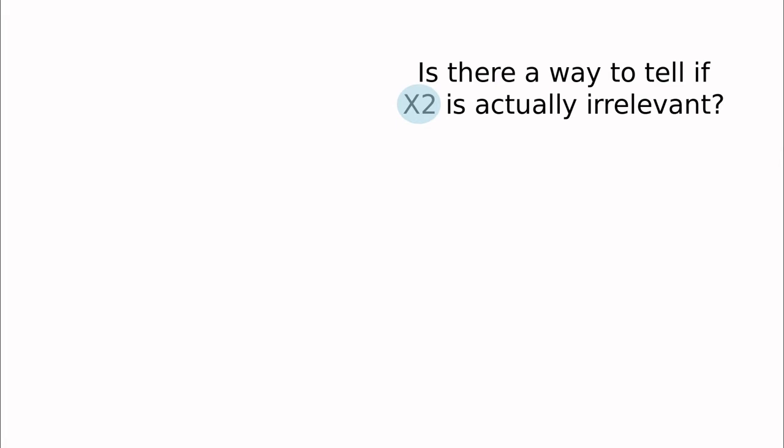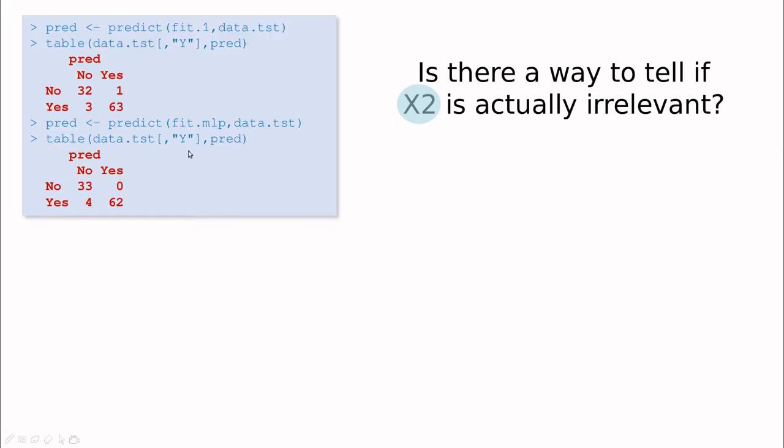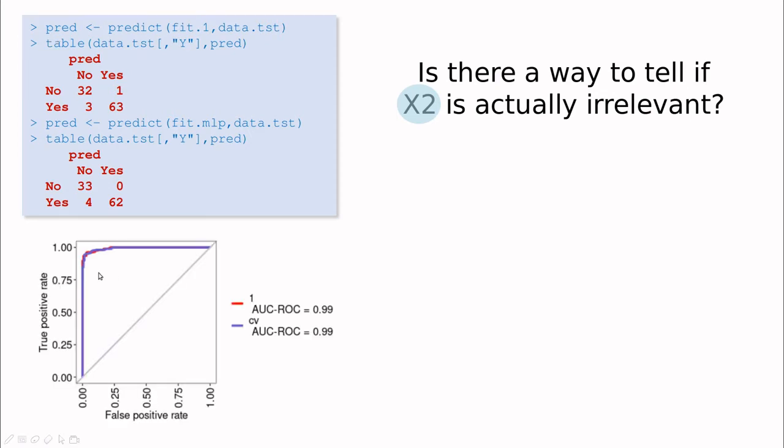So we could recap this video with this question. So is there a way, a systematic way to tell if x2 is actually relevant? Because the problem is that all the metrics that we have used so far to compare models, like the confusion matrix and the area under the curve for instance, are not going to discriminate between a good model and a bad model.